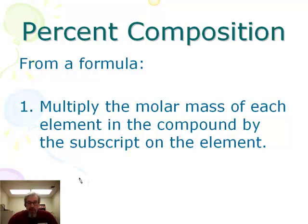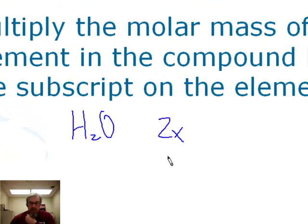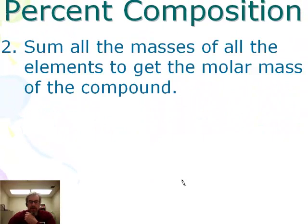The first thing to do is multiply the molar mass of each element in the compound by the subscript on the element. For example, let's say the compound is H₂O. I would take two times the molar mass of hydrogen, and one times the molar mass of oxygen.